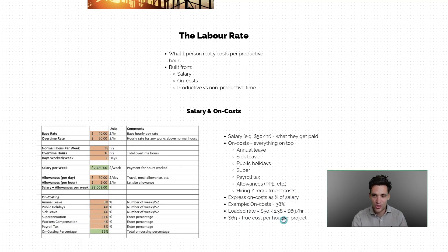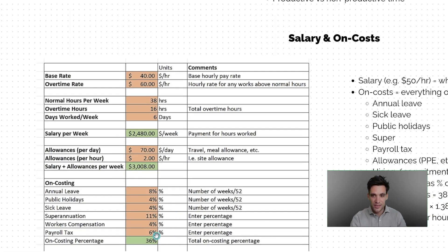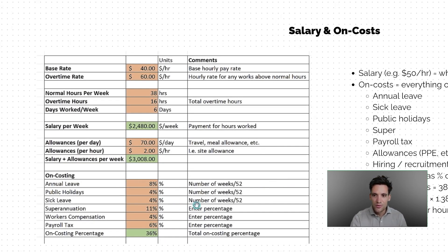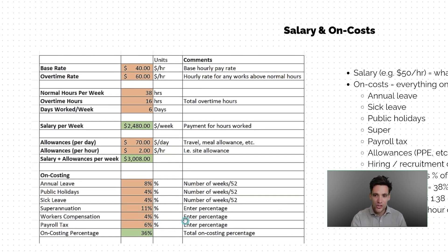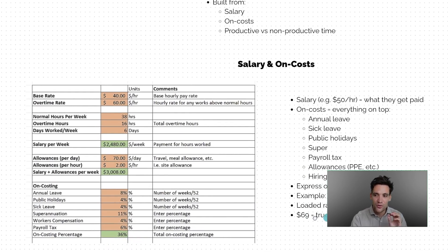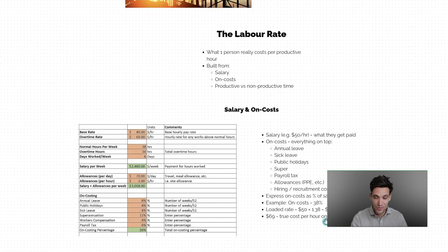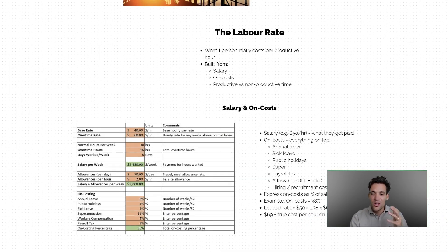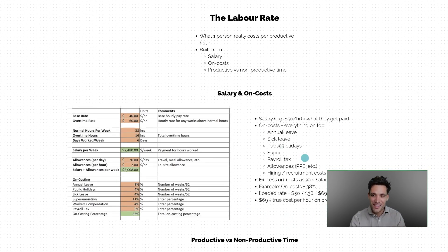This is referred to as the loaded cost rate. For example, if we factor in 8% for annual leave (four weeks out of 52), public holidays at 2 weeks per year equalling around 4%, sick leave at another two weeks per year, superannuation of 11%, workers' compensation of 4%, and payroll tax of 6%, we end up with an on-cost percentage of about 36%. So the true cost of that person ends up being around $69 per hour to the business — significantly more than their salary.